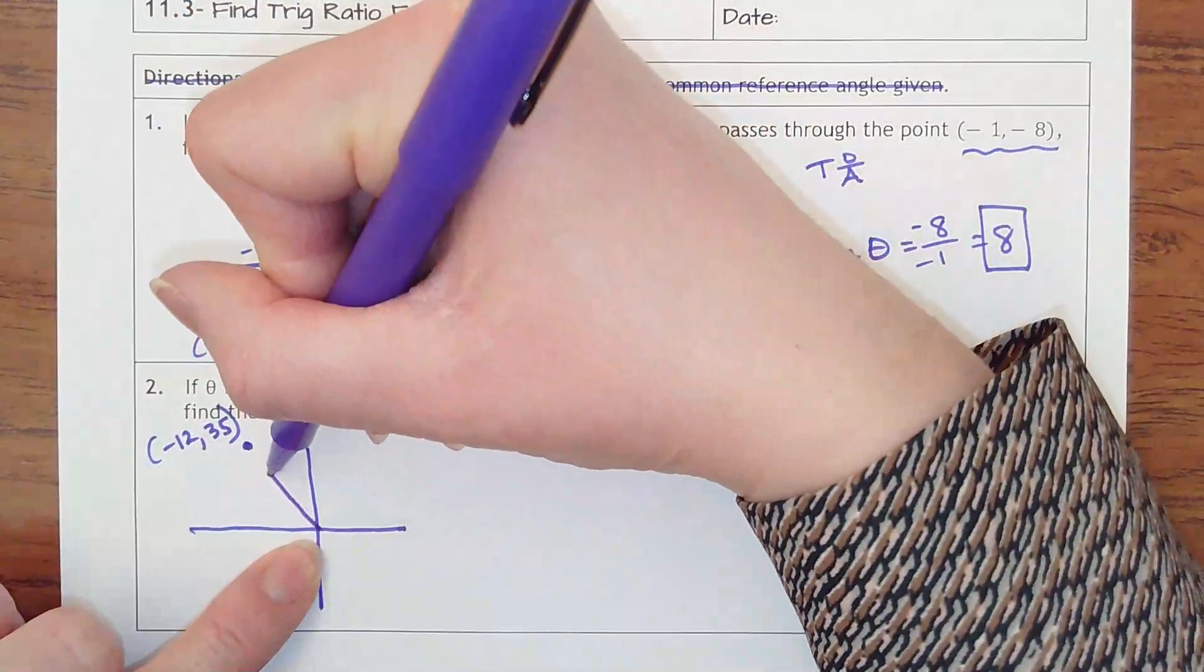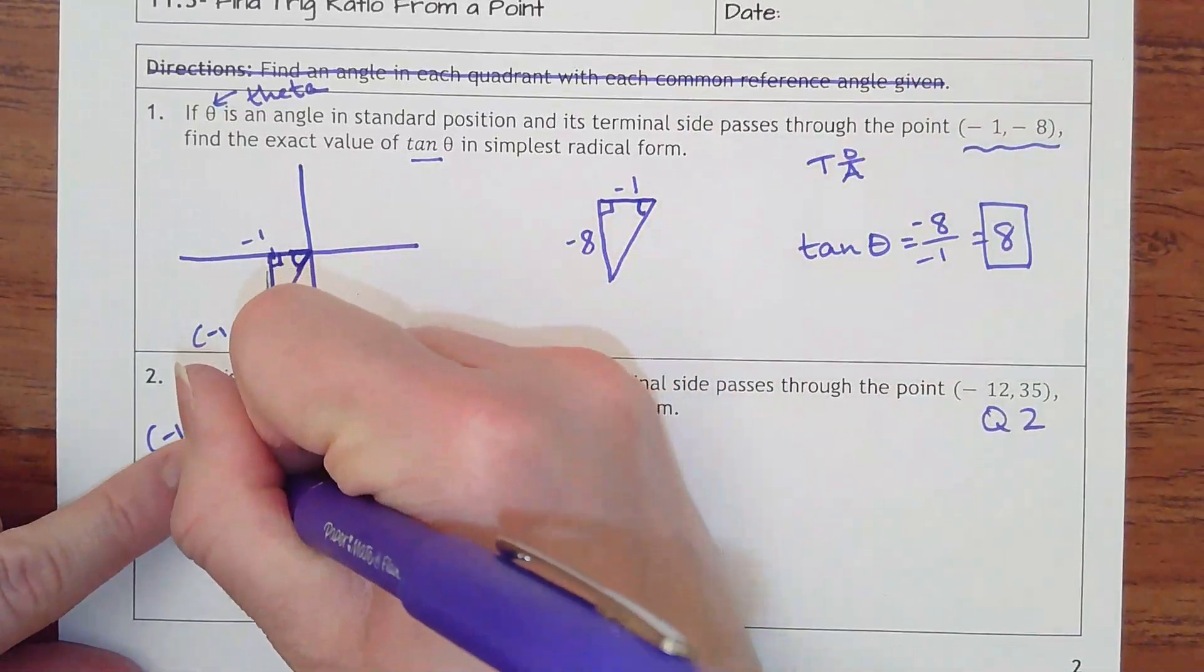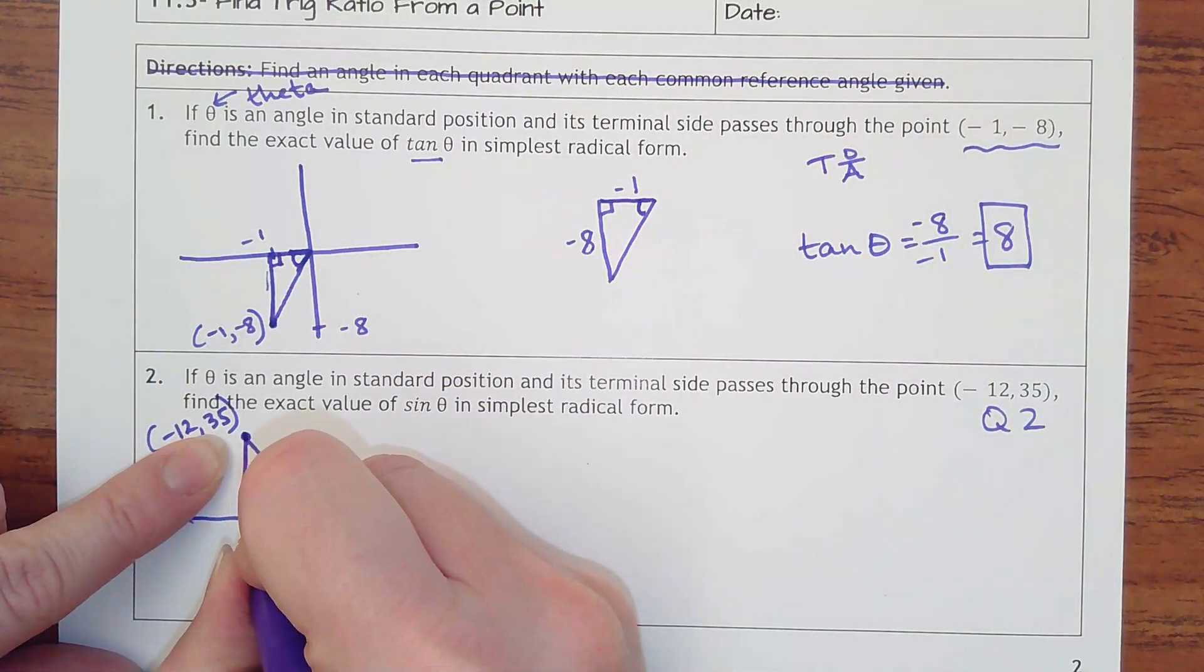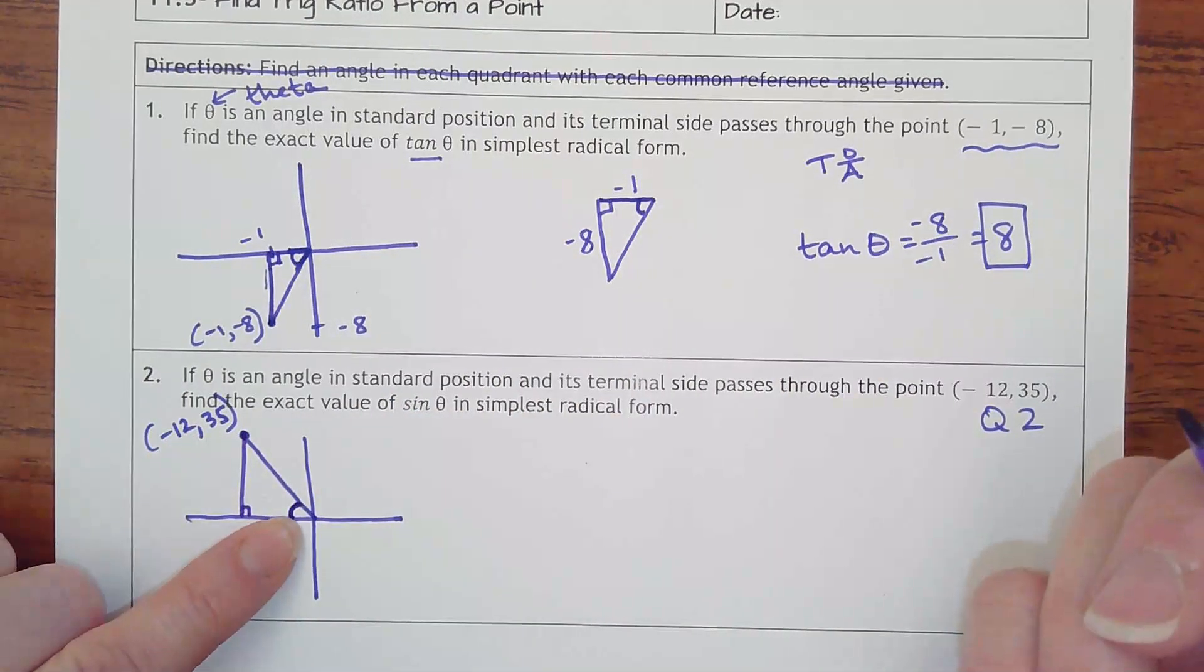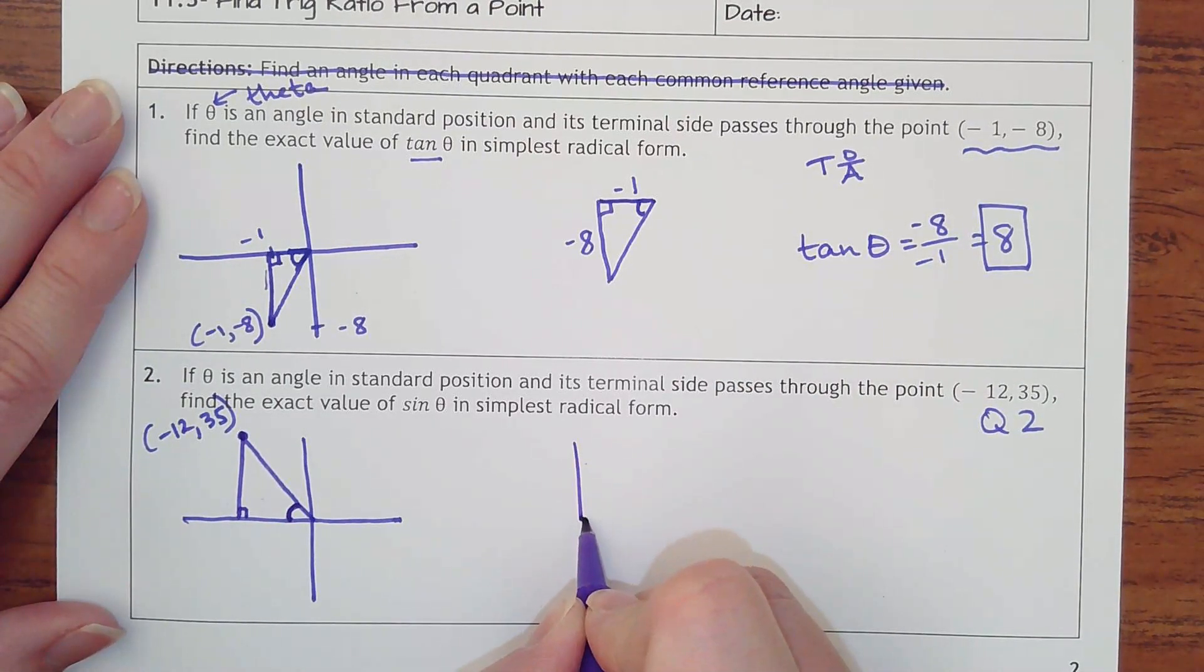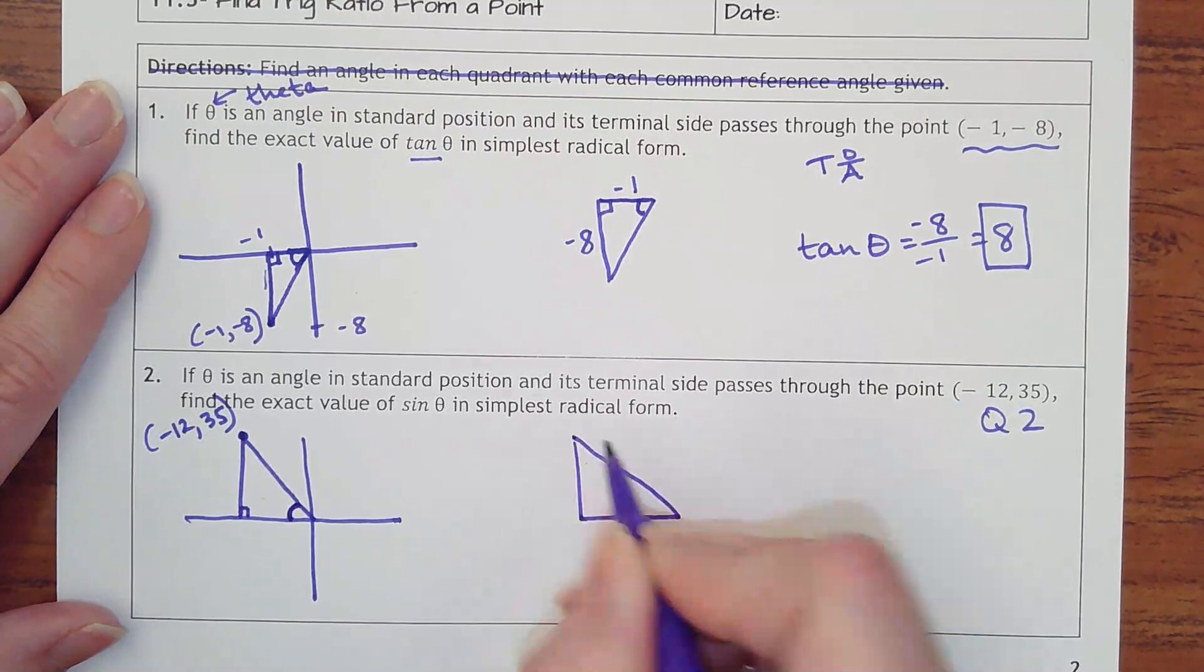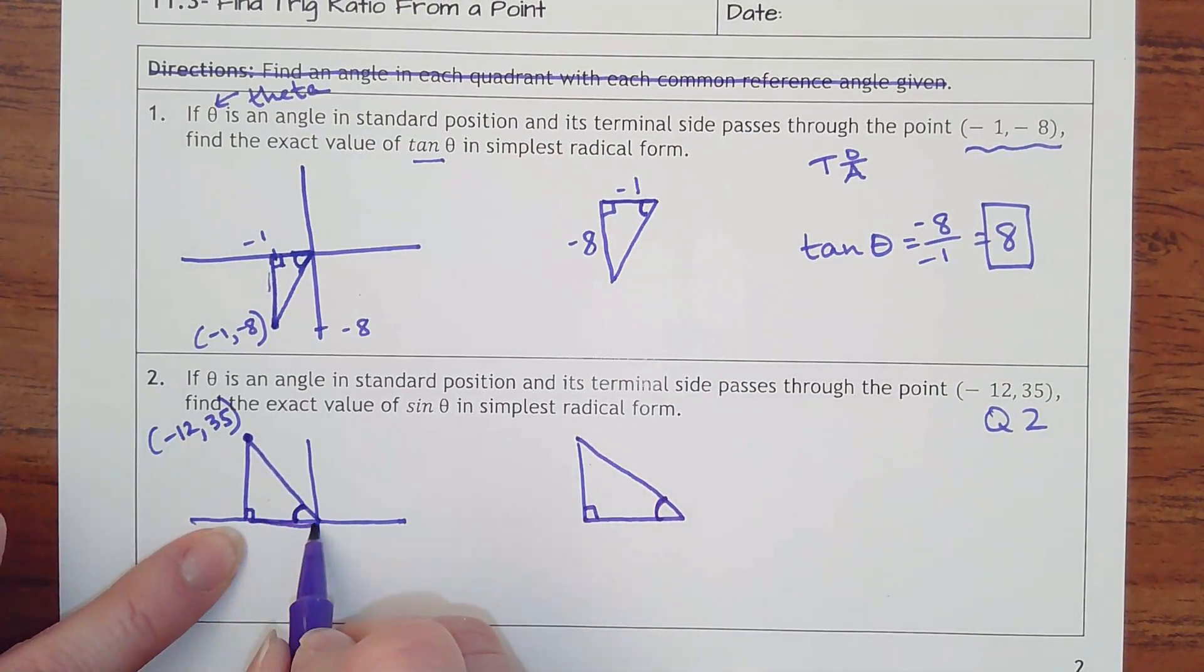So we're going to come from the origin and then connect a diagonal line, and then I need to drop down a leg that goes to the x-axis. So our theta, our angle here, is what we're talking about from here with the x-axis. Okay, so if you want to then take it off the coordinate plane you can to help you have a little more room to write.